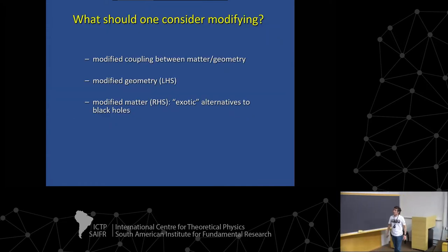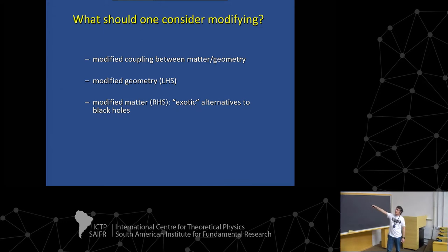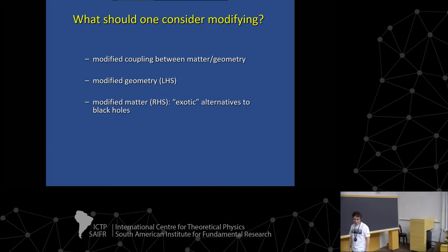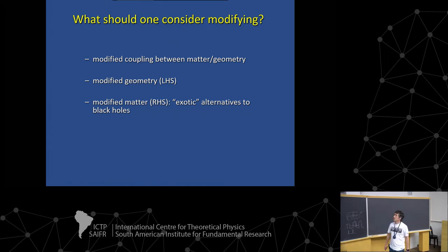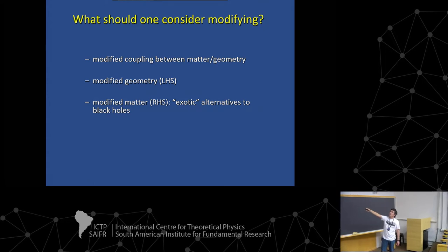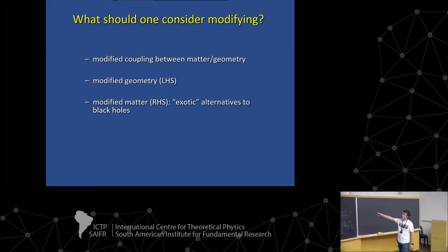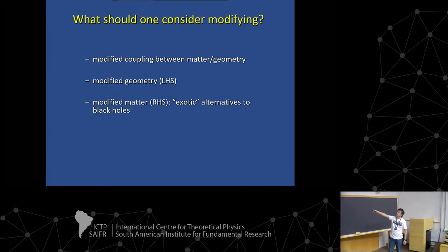So, for instance, if you're going to, I'm going to discuss some of these things, but generically, if you want to consider modifying GR, or modifying something that may reflect itself as deviations that LIGO or cosmological probes may see, you have different choices. One is, you could imagine coupling gravity in a different way to matter. And I'll show you some examples. You could imagine modifying the geometry, that is, modifying the left-hand side of the equations, not the matter, but the left-hand side. Or you could imagine modifying the right-hand side. These are, for instance, you can imagine creating exotic alternatives to black holes.